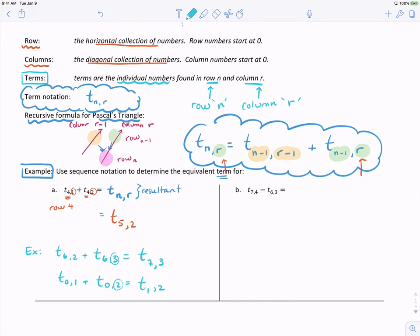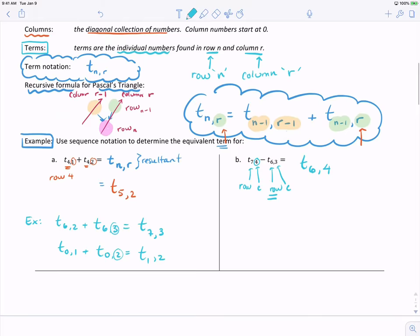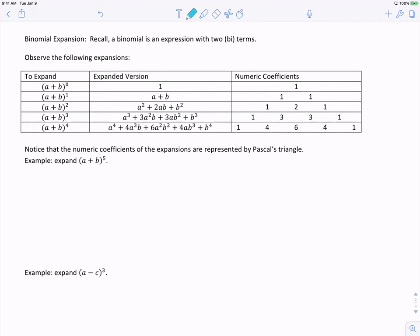For example B, we are looking at an example where I'm subtracting. This is the row and the column subtracting row and column. My resultant, remember I'm subtracting them, is going to be the lowest row. This is one of the harder types of questions. And always the highest value. So when I'm subtracting, taking the lowest row and the highest value, which is the opposite of what we just did when we added a row.